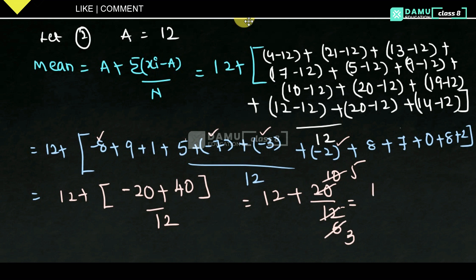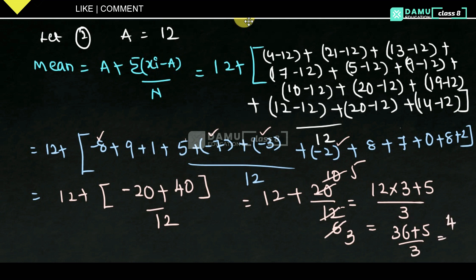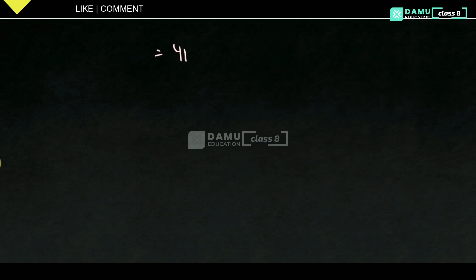Simplifying: 12 into 3 plus 5 by 3. 12 threes are 36, plus 5 by 3 equals 41 by 3. 41 divided by 3 gives 13.666, that is 13.67.